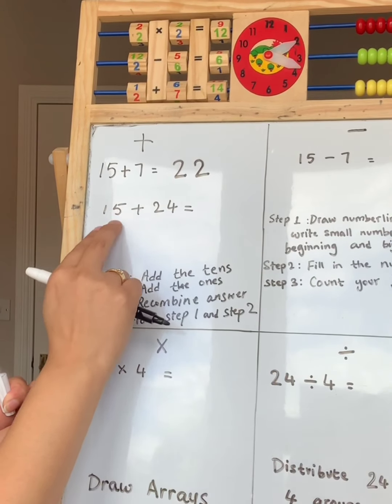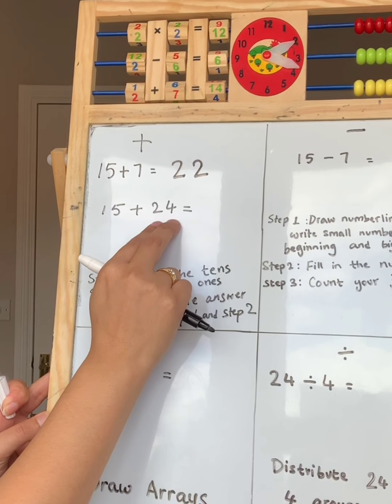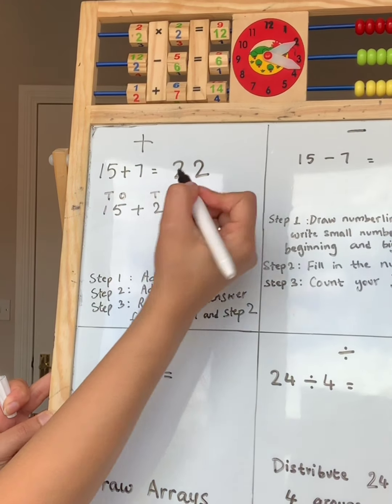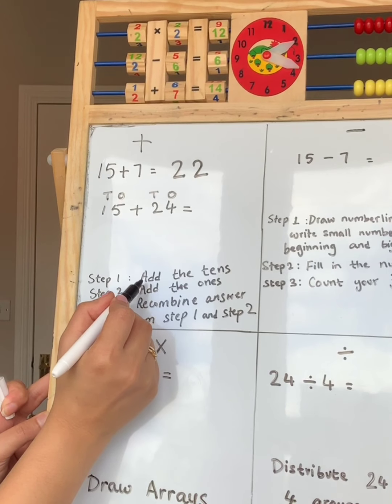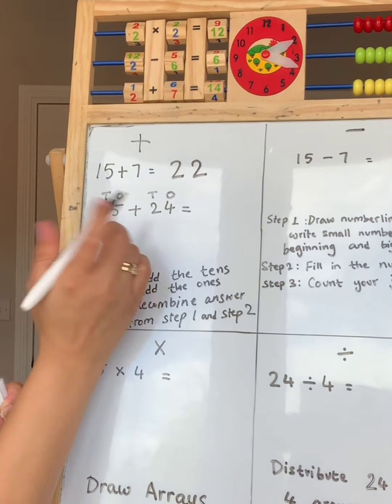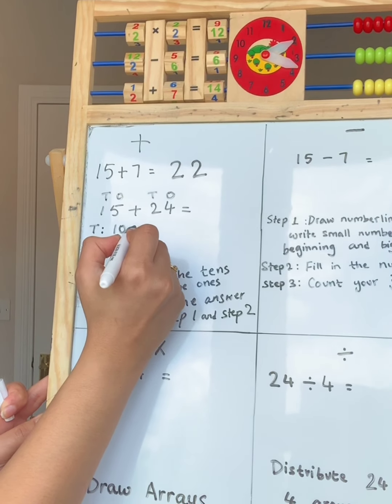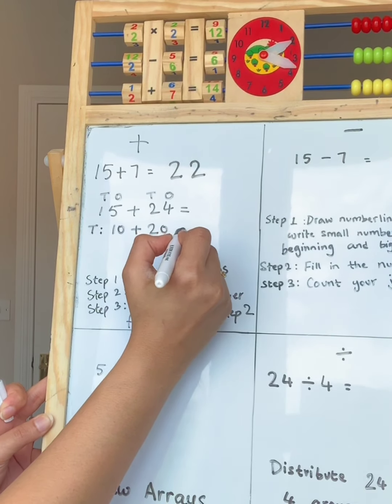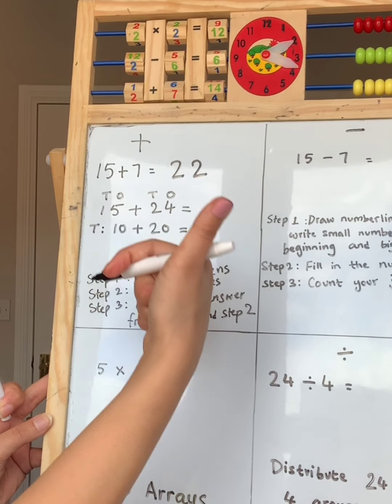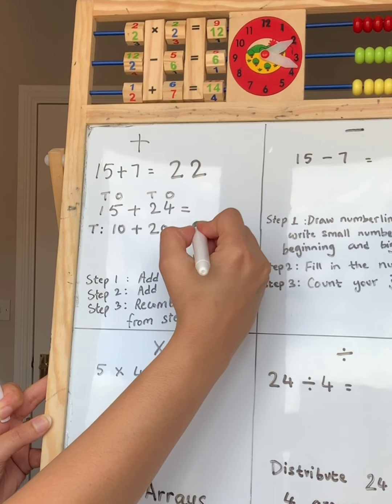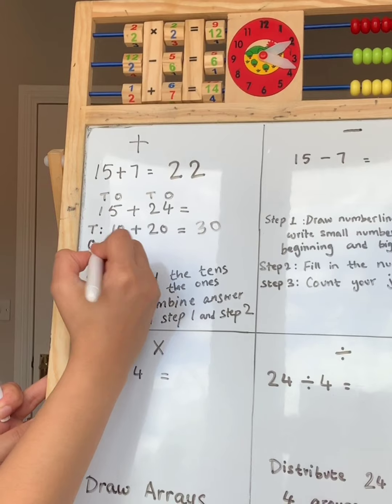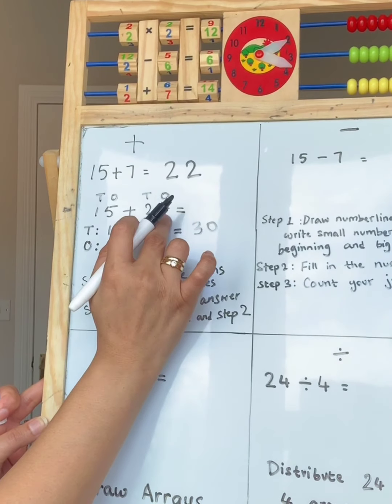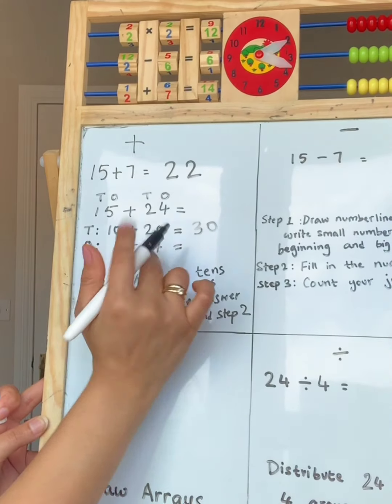Here, we have adding with 2 double digits. 15 is double, 24 is double. What do we do? We do our tens and ones. We partition. Step 1. Add the tens. I'm going to write my tens first. Just 1 ten from this side and 2 tens from this side. We have 20. 10 add 20. Counting in tens. 10, 20, 30. Step 2 add the ones. We have 5 on this side. I'm going to write the 5. We have 4 on this side. I'm going to write 4. 5 add 4.